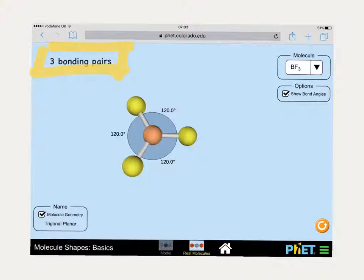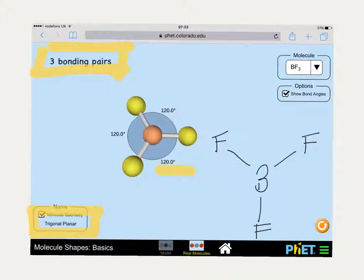BF3 has three bonding pairs of electrons, and that gives rise to a shape where the electrons get as far away as possible, giving a bond angle of 120 degrees. We name this shape trigonal planar because all the atoms are in a single plane. To draw the molecule, we have boron in the center with single lines coming away, drawing our fluorine bonds with bond angles approximately 120 degrees away from each other.